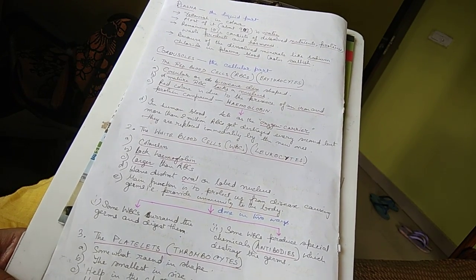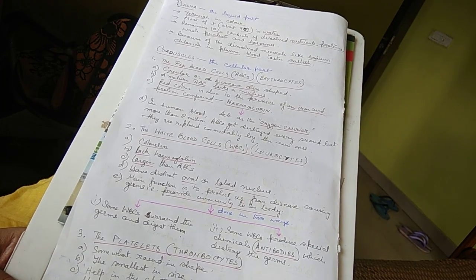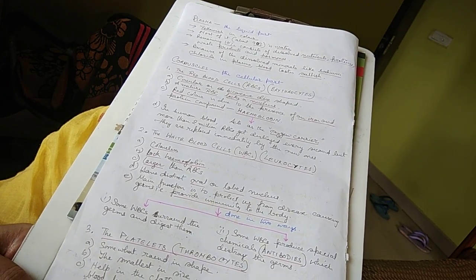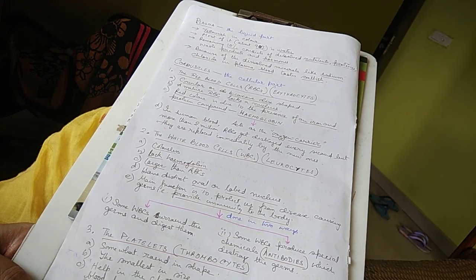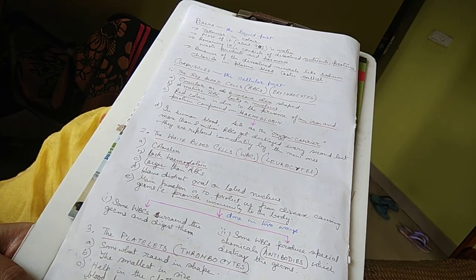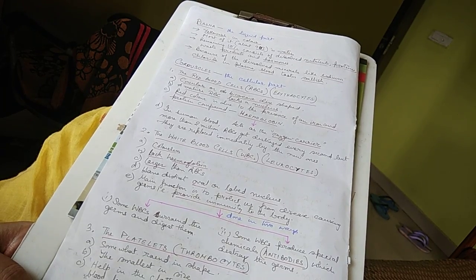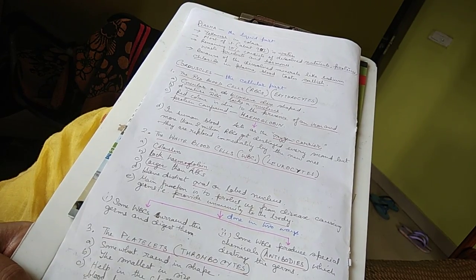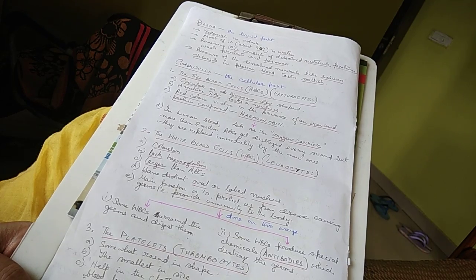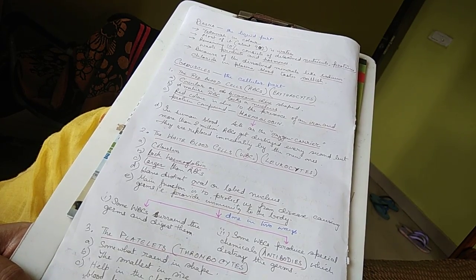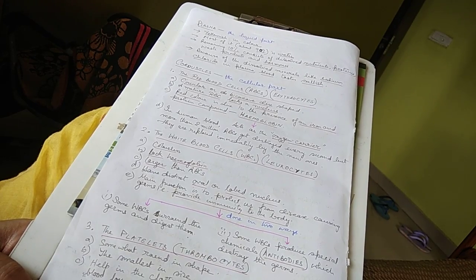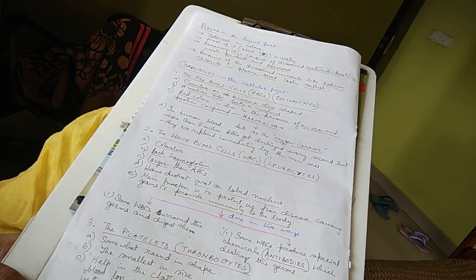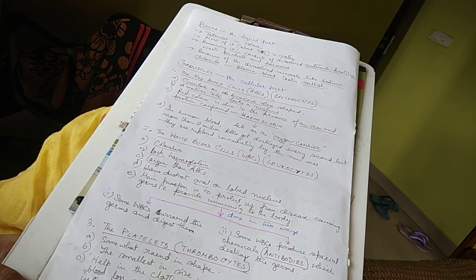This white blood cell, which is the second type of cell in blood, is also called leukocyte. It has no color, it is colorless, it has no hemoglobin. It is larger than RBC, its nucleus is very prominent, which is oval or lobed. Its main function is to protect our body from disease causing germs, so that our body can get immunity. This WBC function happens in two ways: one is that WBC surrounds the germs and engulfs them.